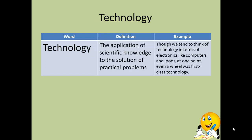Technology is a term you hear all the time, but we tend to think of it only in terms of high-tech, computer-esque things. But technology is much more basic than that. Technology is the application of scientific knowledge to the solution of practical problems. So everything from a simple lever to an iPhone is technology. Though we tend to think of electronics like computers and iPads, at one point even a wheel was first-class technology. All of these are still forms of technology.